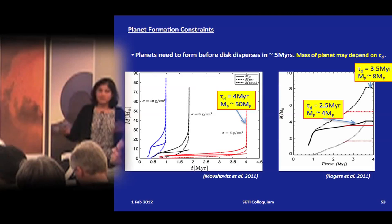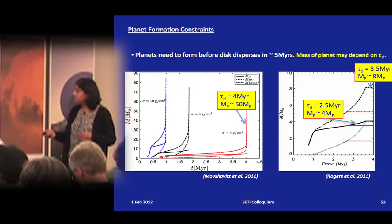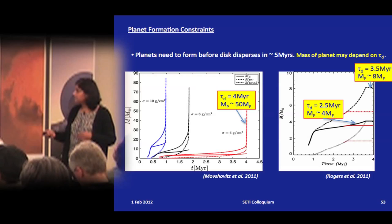So depending on disc lifetime, you could form a Jupiter-mass gas giant or smaller, rockier objects with a little gas — similar to what Kepler is finding. We also need to know where the gas is in the final stages — whether it's in the outer disc or the inner disc.